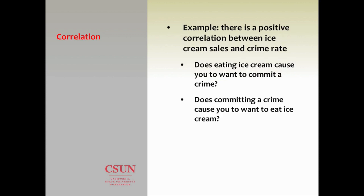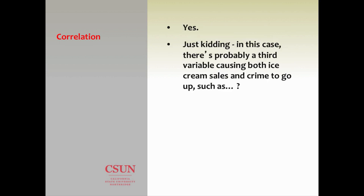There's a classic example from the textbook: there's a positive correlation between ice cream sales and crime rate. Does eating ice cream cause you to want to commit a crime? Obviously no. Does committing a crime cause you to want to eat ice cream? Obviously these are strange relationships. You're seeing a correlation between ice cream sales and crime, but one is not causing the other. This illustrates why correlation does not imply causation.